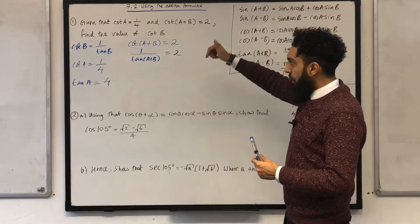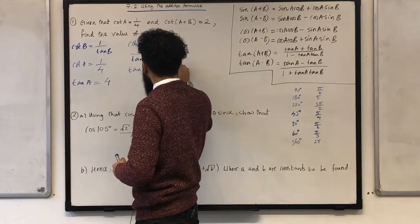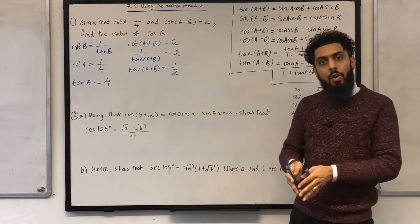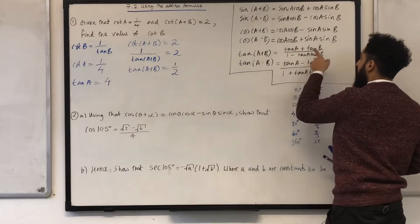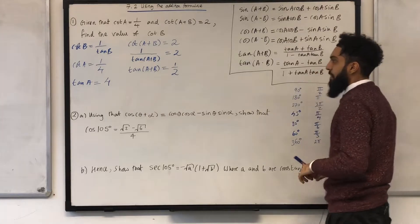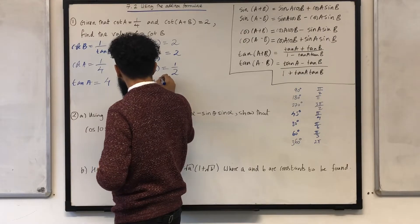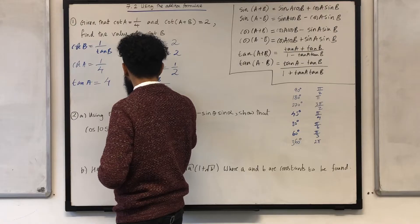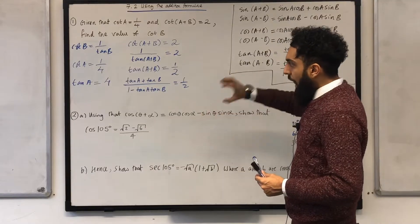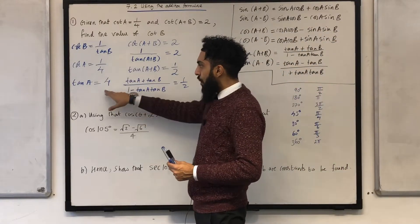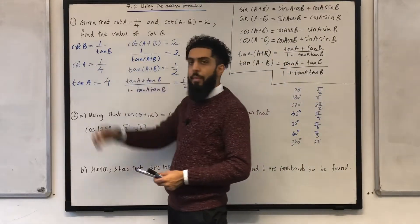Now, if I take the reciprocal of both sides, I just get tan(a + b) is equal to 1 over 2. Now, I know the addition formula for tan. Okay, tan(a + b) is just tan a plus tan b all over 1 minus tan a tan b. So, I can write that down. tan(a + b) equal to 1 over 2. Now, this is looking absolutely brilliant. I can actually replace the tan a's with 4 and then rearrange to work out tan b. And if I know tan b, I can then calculate cot b, no problem.